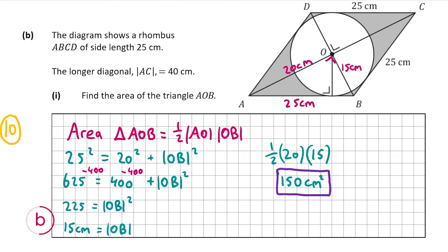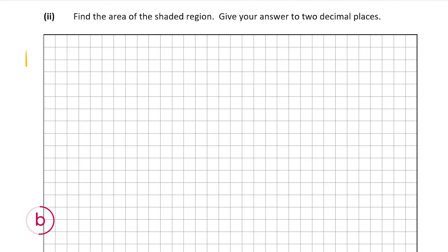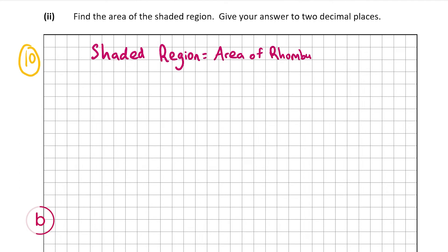Now let's look at B part 2, which is also worth 10 marks. We have to find the area of the shaded region. The shaded region equals the area of the rhombus minus the area of the circle, and to work out the area of the circle we need the radius.